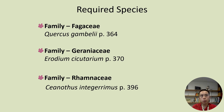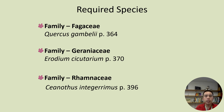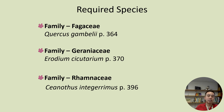First off is Quercus gambelii from the Fagaceae family, found on page 364 in your reading. Next is Erodium cicutarium from the Geraniaceae family, found on page 370. And finally we have Ceanothus integrimus, which is in the Rhamnaceae family, found on page 396.